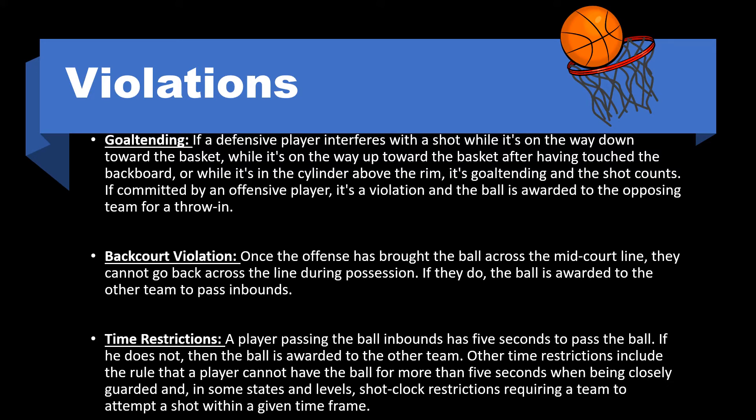Goal tending: if a defensive player interferes with a shot while it's on the way down toward the basket, on the way up after touching the backboard, or while it's in the cylinder above the rim, it's goal tending and the shot counts. If committed by an offensive player, it's a violation and the ball is awarded to the opposing team for a throw-in. Backcourt violation: once the offense has brought the ball across the midcourt line, they cannot go back across the line during possession; if they do, the ball is awarded to the other team.